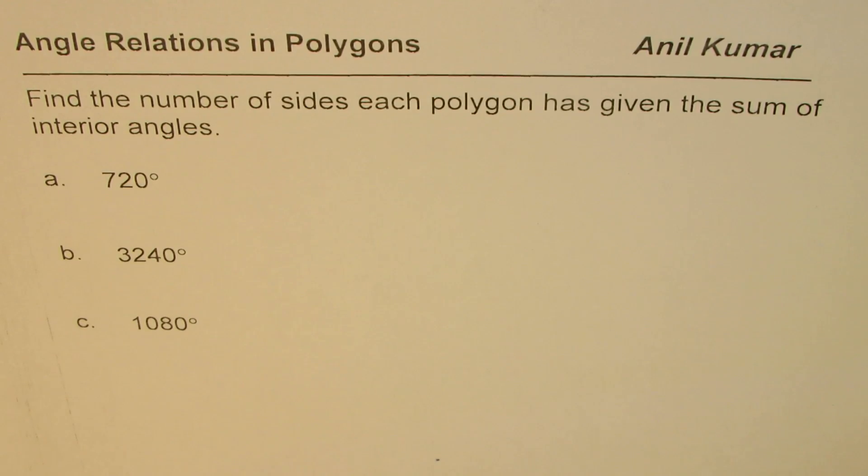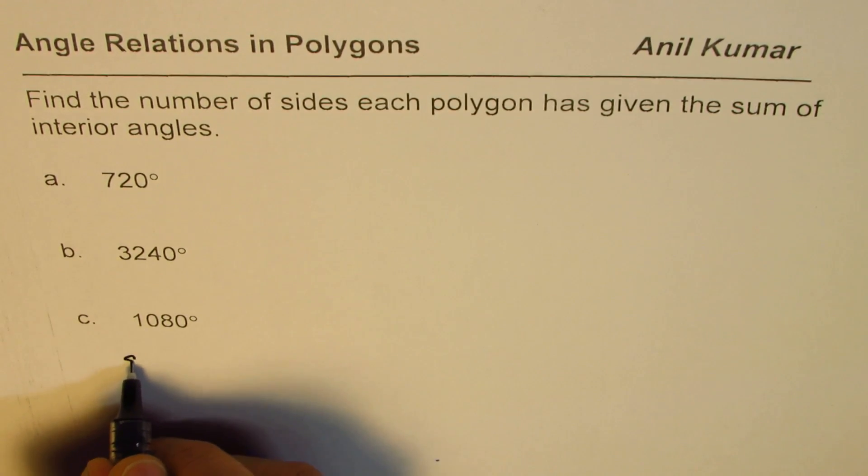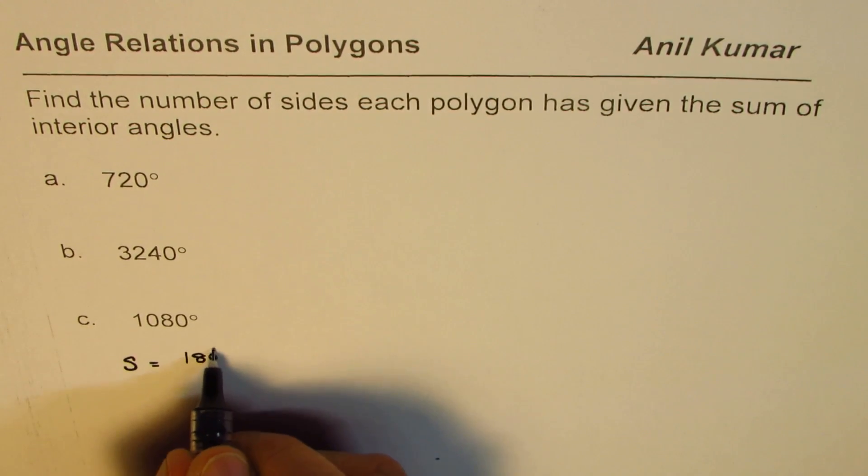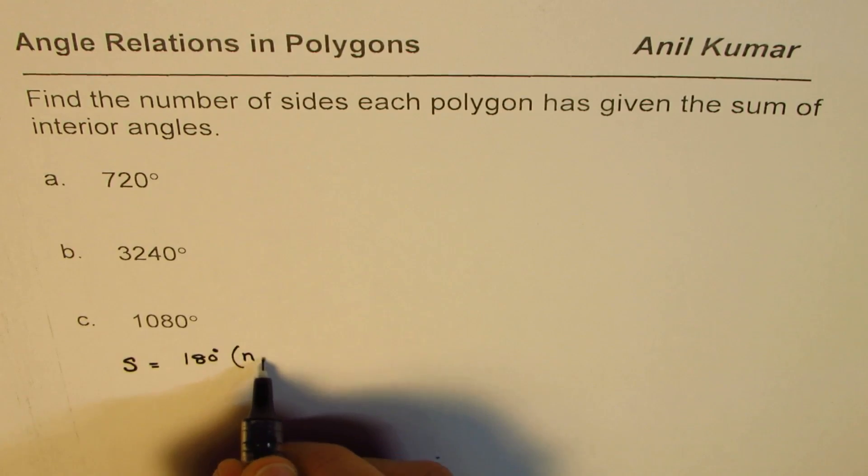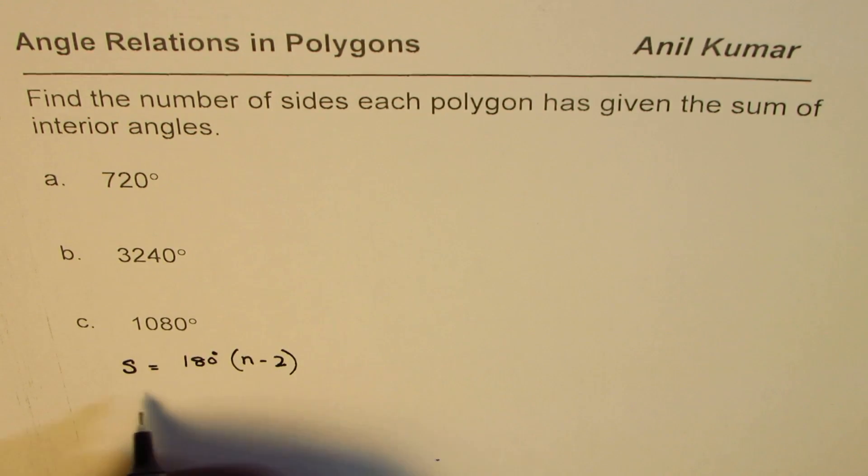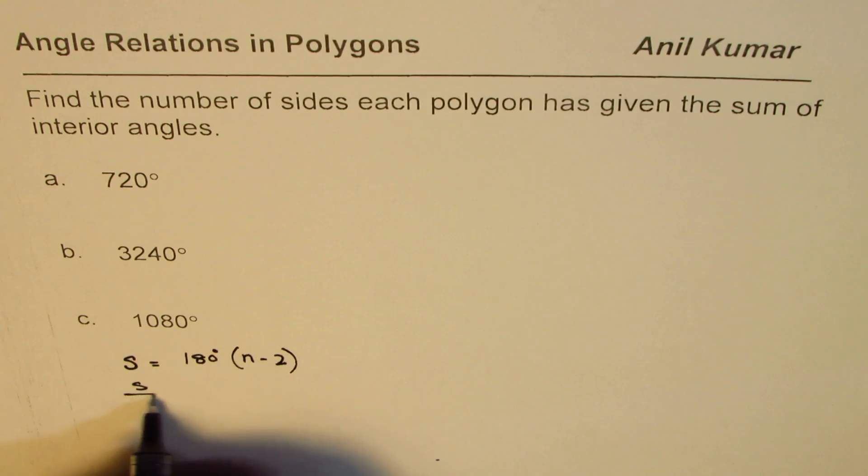The sum of angles, denoted by S, equals 180 degrees times (n - 2). To find the number of sides, we need to rearrange this formula, so we can say sum divided by...